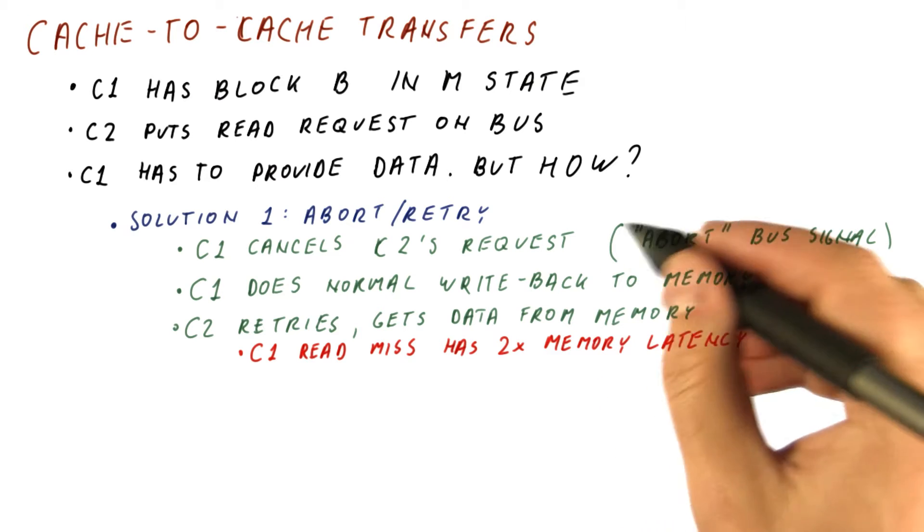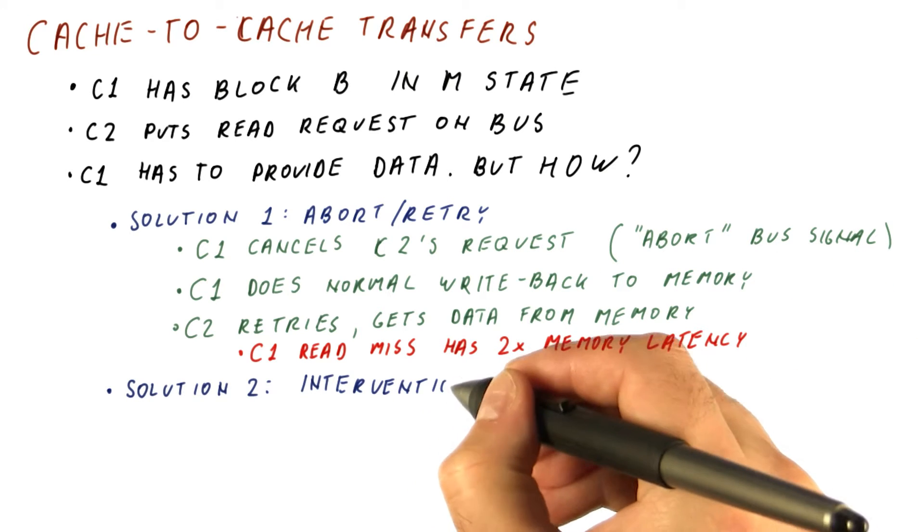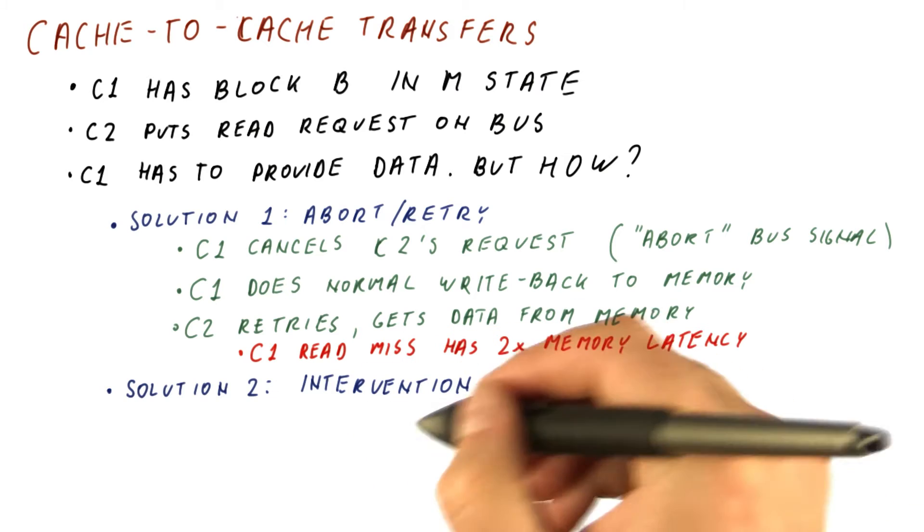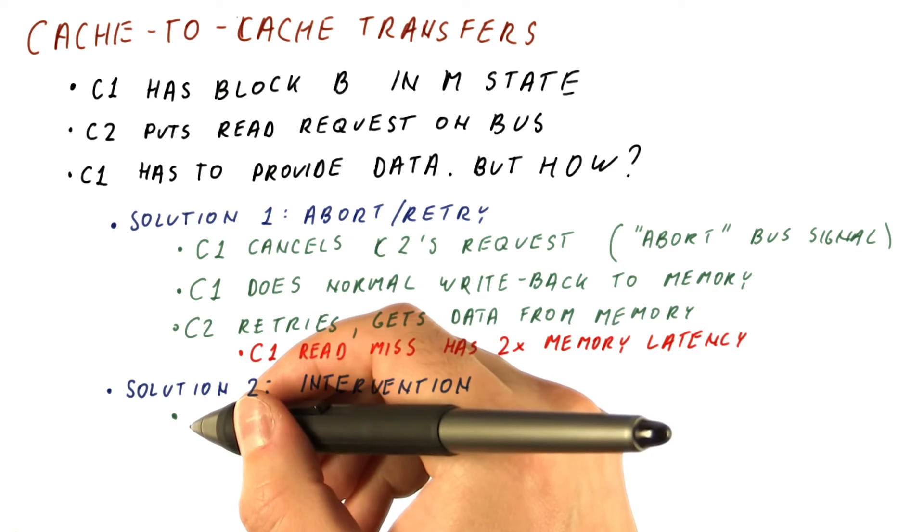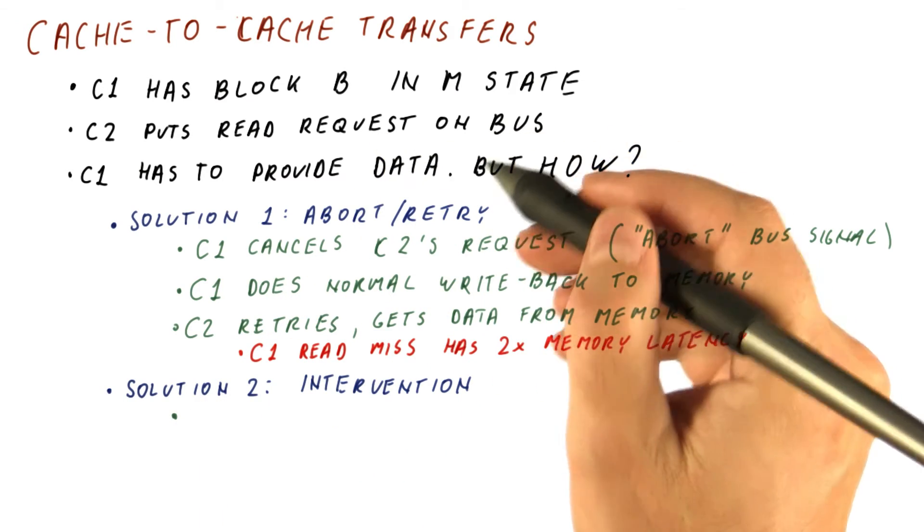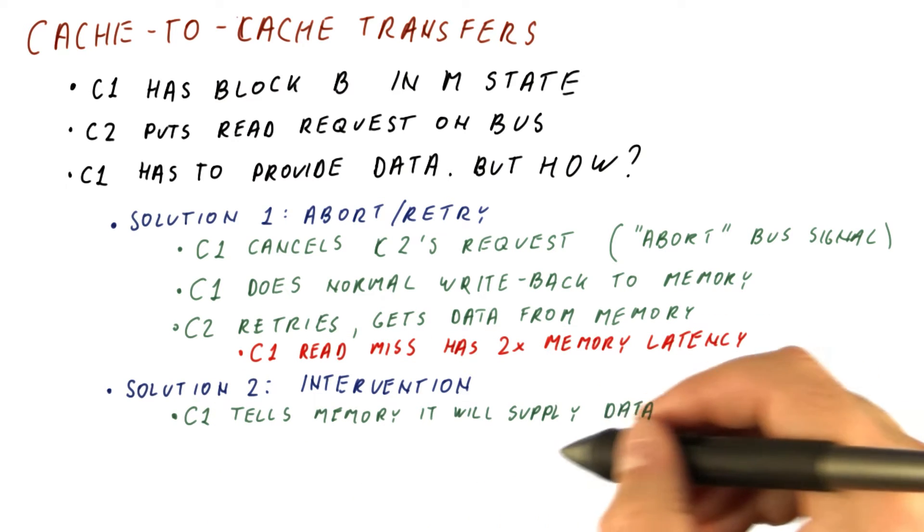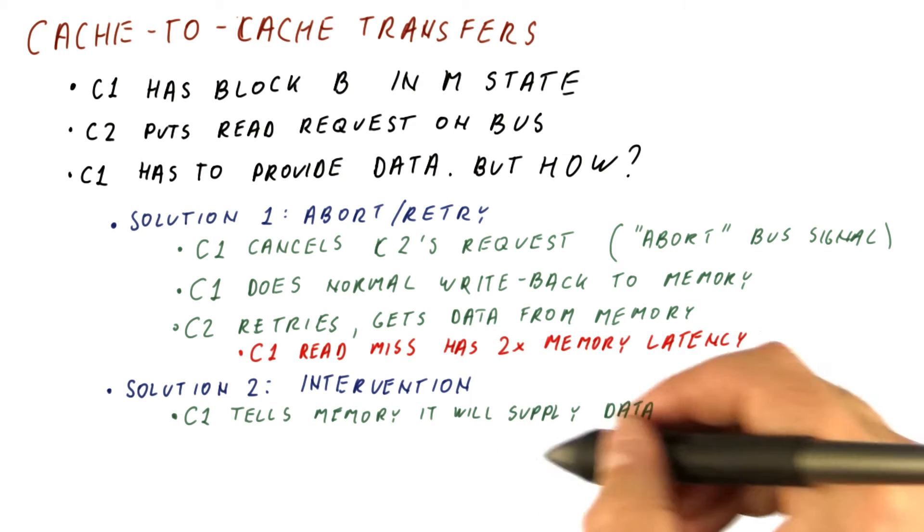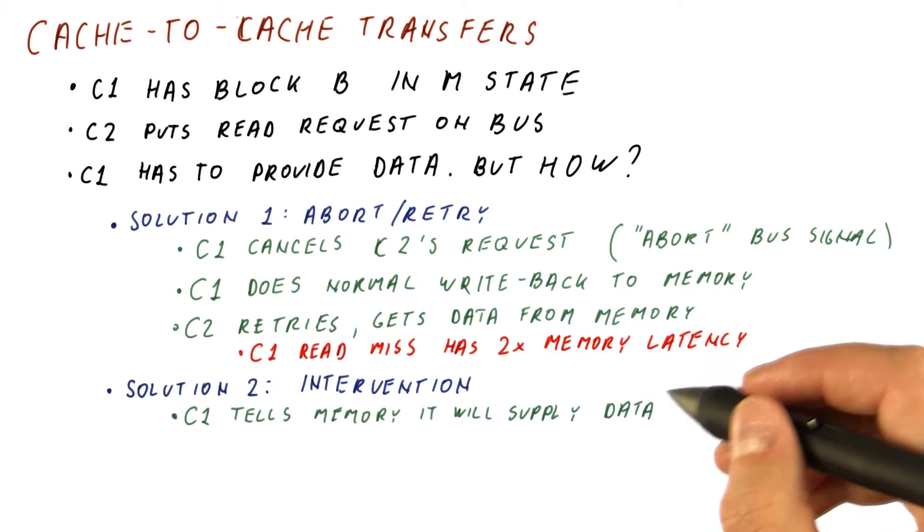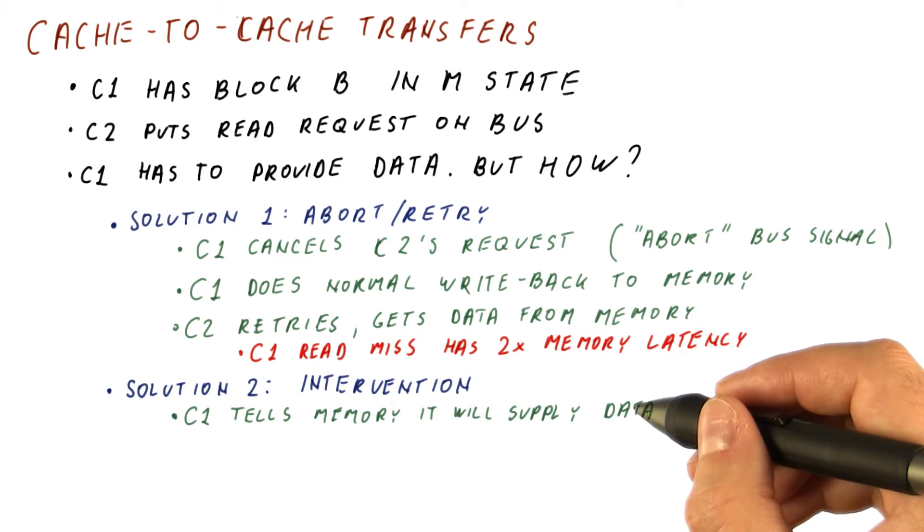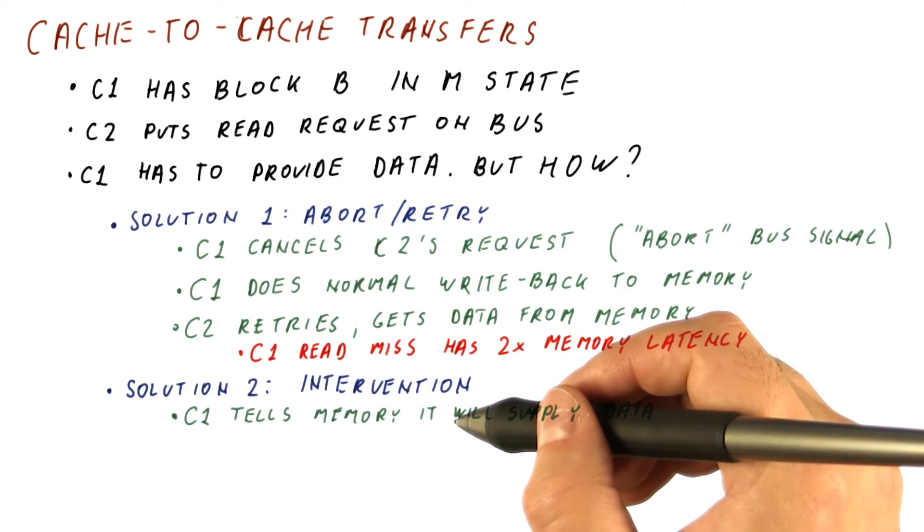The second solution is called intervention. In this case, C1 sees the read request is being made and it tells the memory somehow that C1 will supply the data instead of the memory. So normally the memory would respond to a read miss request. Now C1 kind of tells memory that I will do that.